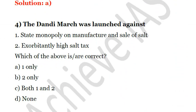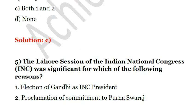Question 4: The Dandi March was launched against — first, state monopoly on manufacture and sale of salt; second, exorbitantly high salt tax. The Dandi March was launched for both of these reasons. At the time, it was a government monopoly to manufacture salt, and salt was also taxed — sometimes up to 14 times the cost of production. So both were reasons for the launch of the Dandi March. The answer is C: both 1 and 2.